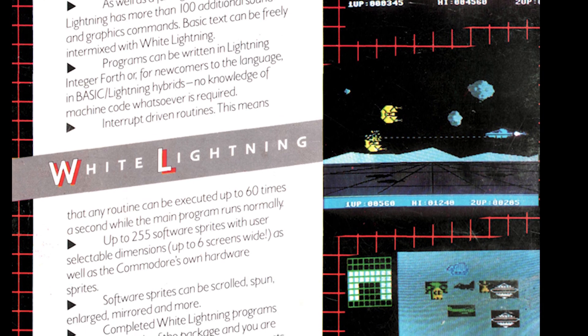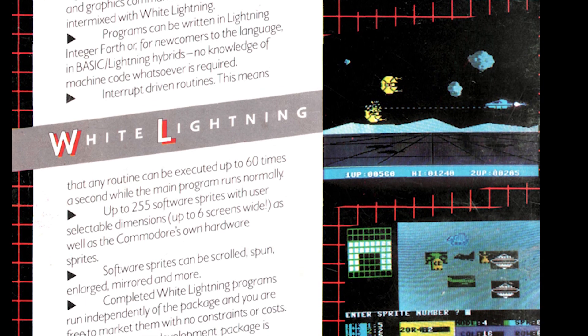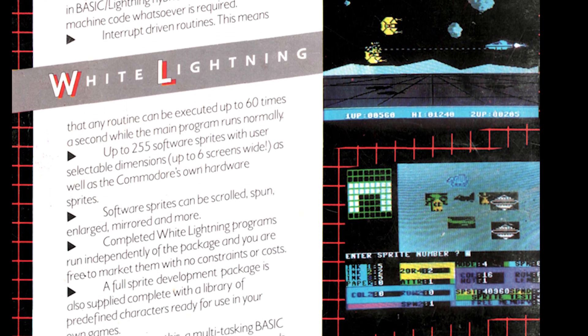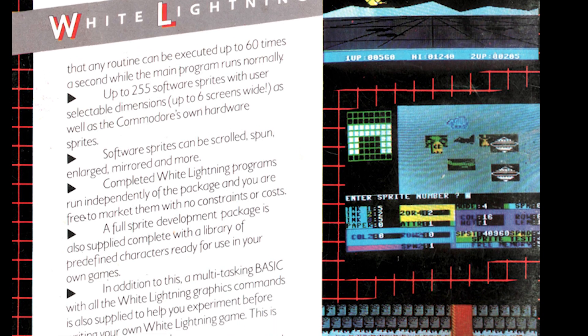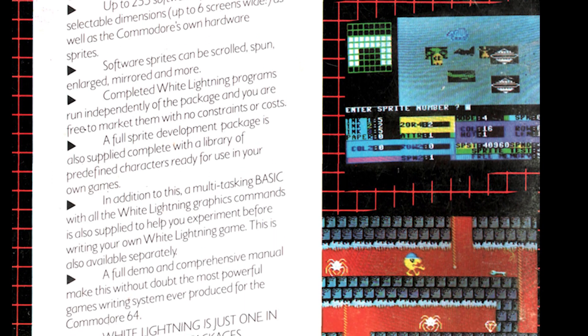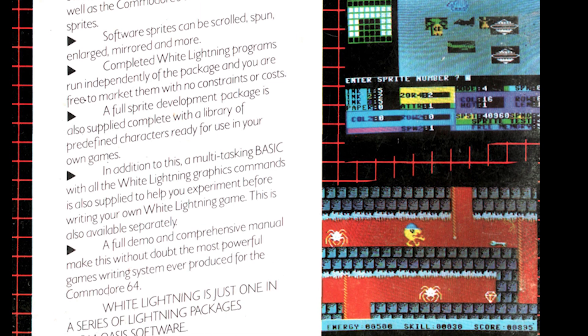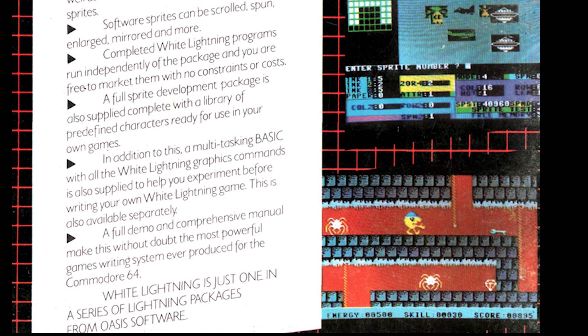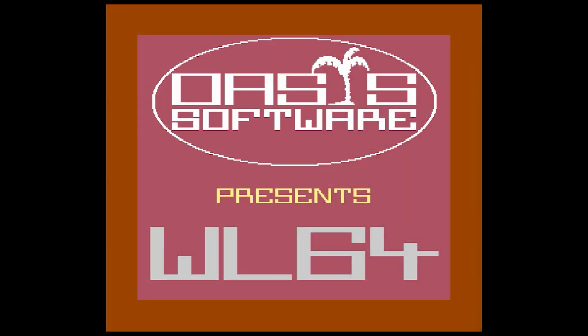This came out in 1984. What's really awesome about this software product is that you can create software and sell it or redistribute it to users without paying royalties, and the users don't need to own a copy of White Lightning to run it. So this is really cool. The version of Forth that comes with this is written by someone named Stuart Smith, who I'm pretty sure is the same guy that wrote the Adventure Construction Set.